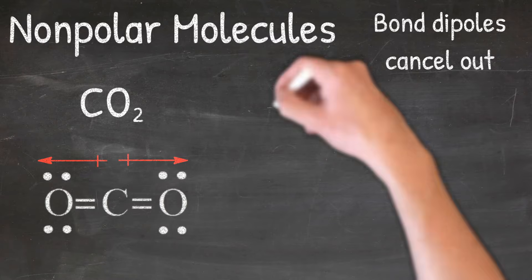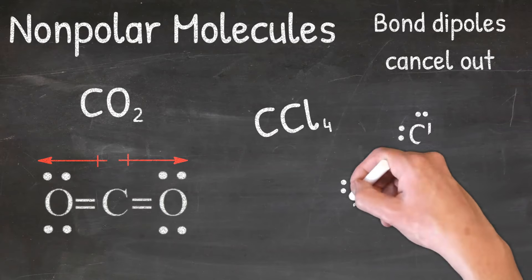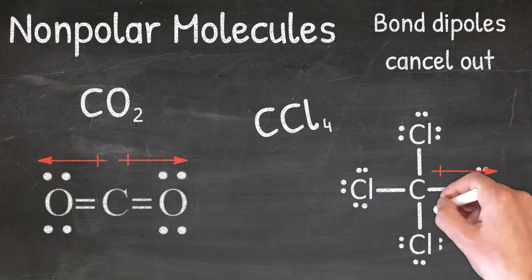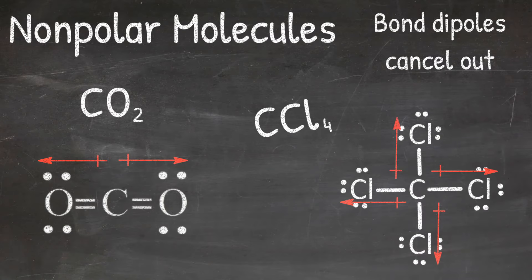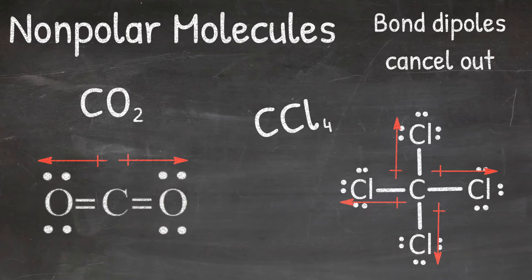In our next example, we will look at the molecule CCl4. Chlorine has a higher electronegativity than carbon, so I'm going to draw my arrows in the direction of chlorine, meaning the electrons are being pulled closer towards chlorine. Again, I can see that I have arrows pointed in equal and opposite directions — all of these arrows cancel out, making the molecule nonpolar. Another way to think about this: if you have a box in the middle and you pull on it in all four directions, that box would not move. If the box is not moving, all of the arrows are canceling out, making the molecule nonpolar.